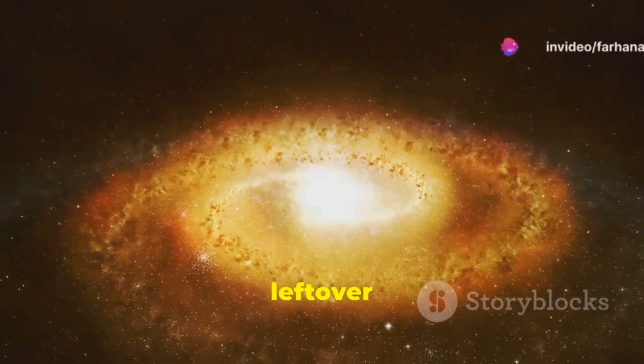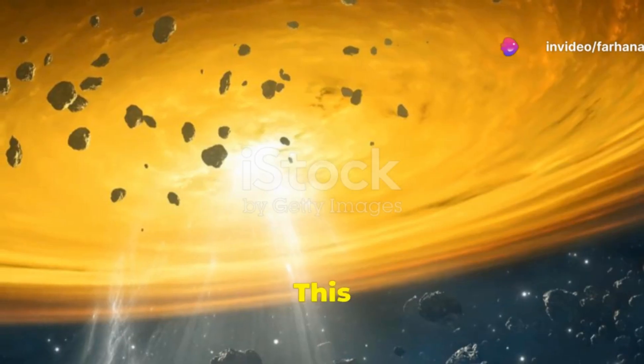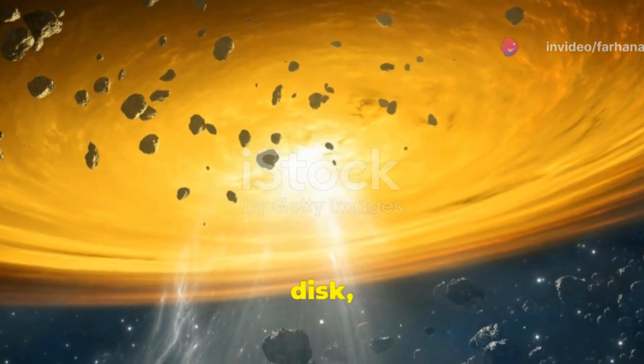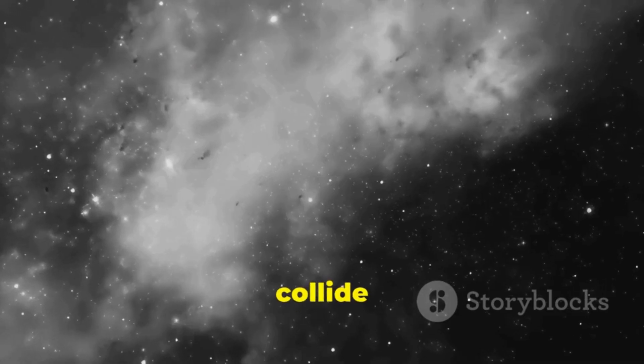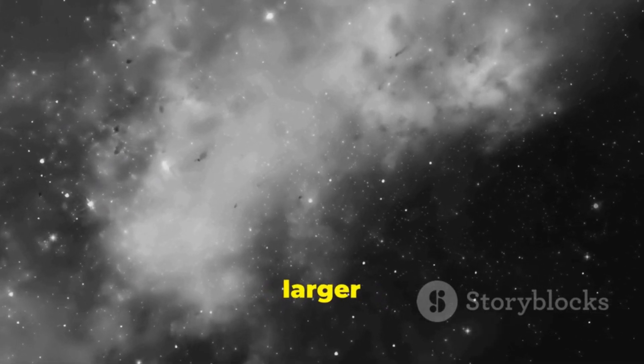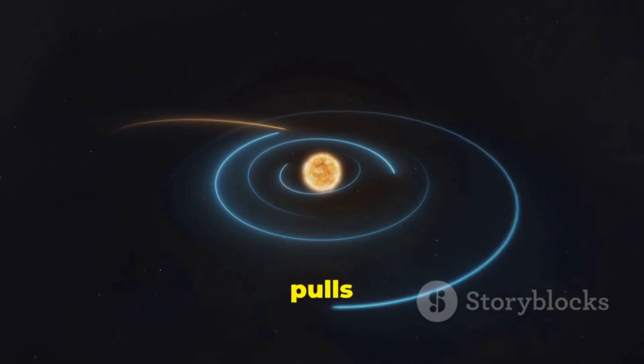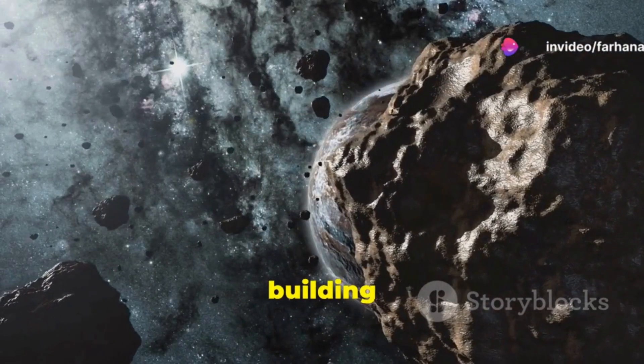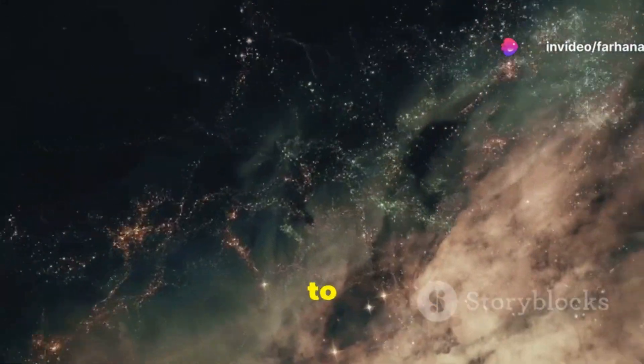Planets form from the leftover materials after a star is born. A swirling disk of gas and dust called the protoplanetary disk orbits the young star. Dust grains collide and stick together, forming larger and larger objects. Gravity pulls these objects together, forming planetesimals. Planetesimals are the building blocks of planets.